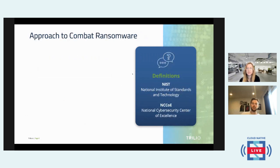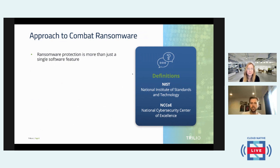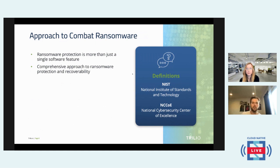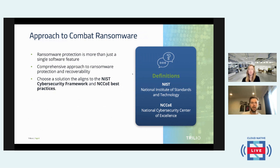There are a few ways organizations combat ransomware. The two most internationally recognized institutions for building best practices are NIST — National Institute of Standards and Technology — and NCCOE, the National Cybersecurity Center of Excellence. These are good rules of thumb for protecting your core-to-edge architecture against ransomware attacks. Ransomware protection is more than just a single feature — it's an entire comprehensive strategy for both protecting against ransomware and recovering from an attack.